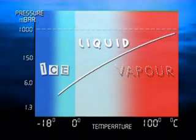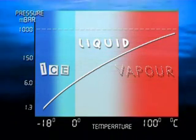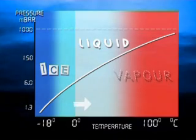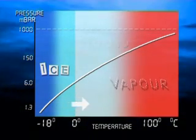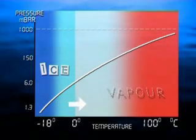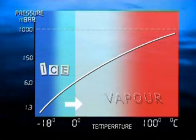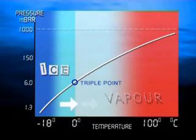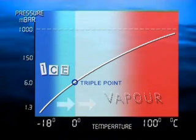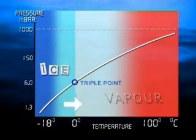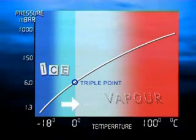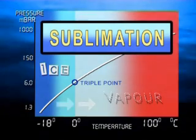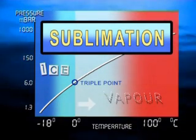And if you lower the pressure to less than 6 millibars, water won't stay in liquid form at all — instead it will change from ice to vapor or vice versa without ever being in liquid form. The point where this first happens is known as the triple point. So as long as we keep the pressure and temperature below the triple point, water can be extracted from frozen product as vapor only. This process is known as sublimation and is the key to successful freeze drying.